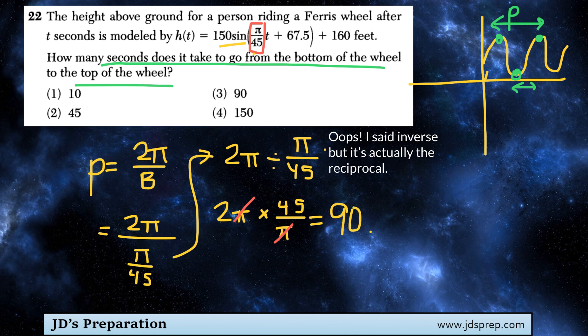Now be careful, 90 is not the right answer, because remember we talked about finding the distance from the bottom of the Ferris wheel to the top, which would be half of the period. So we actually need to take the period and divide it by 2 to get the answer.